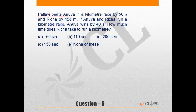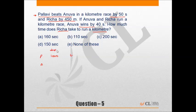Question 5: Pallavi beats Anuva in a kilometer race by 50 seconds and beats Risha by 450 meters. If Anuva and Risha run a kilometer race, Anuva wins by 40 seconds. How much time does Risha take to run a kilometer? If Pallavi takes T seconds to cover 1000 meters, then Anuva takes T + 50 seconds.